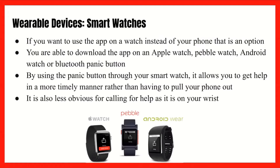You can also use smartwatches to send out emergency SOS alerts. If you want to use the Red Panic Button app on a watch instead of your phone, that's always an option. You can download the app on an Apple Watch, Pebble Watch, or an Android watch, or also a Bluetooth panic button. Using the panic button through your smartwatch allows you to get help in a more timely manner rather than having to pull your phone out. It's also less obvious for calling for help since it's on your wrist — for example, if you were in a dangerous situation, it's more subtle than taking out your phone. Not everybody has a smartwatch, but it's just an option if you do.